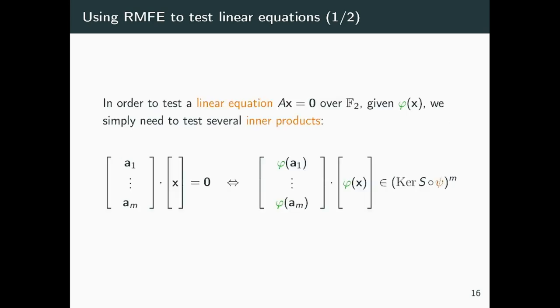This is just for inner products. What if we need to test a linear equation of the form Ax = 0 with A a matrix? Well, in this case, the key observation is that performing a matrix multiplication is nothing more than a series of inner products, where each time we perform the inner product with x and the i-th row of A. So, we simply need to repeat the step that I showed you before for each row of A.